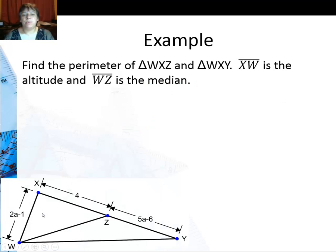In this problem we're going to find the perimeter of triangle WXY and triangle WXZ. I know that XW is an altitude so that means that's a 90 degree angle there. And I know WZ is a median. So the first thing I'm going to do if that's a median that means this segment XZ is congruent to ZY.